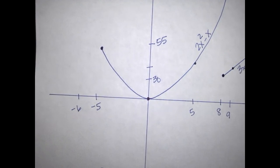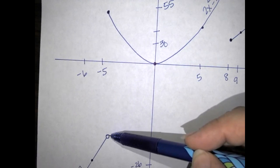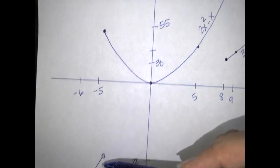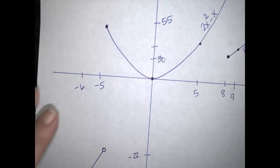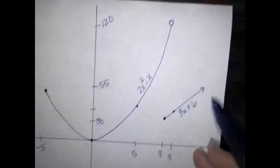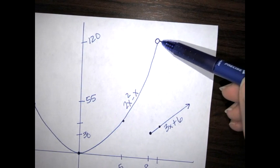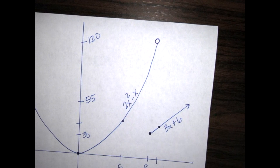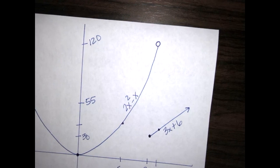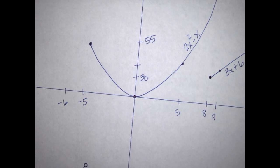Notice that at the bound x = negative 5, the first piece has an open circle while the second piece has a closed circle. At the bound x = 8, the quadratic piece has an open circle while the third piece is closed. Make sure your pieces line up on the same bound values and are graphed as they're supposed to be.